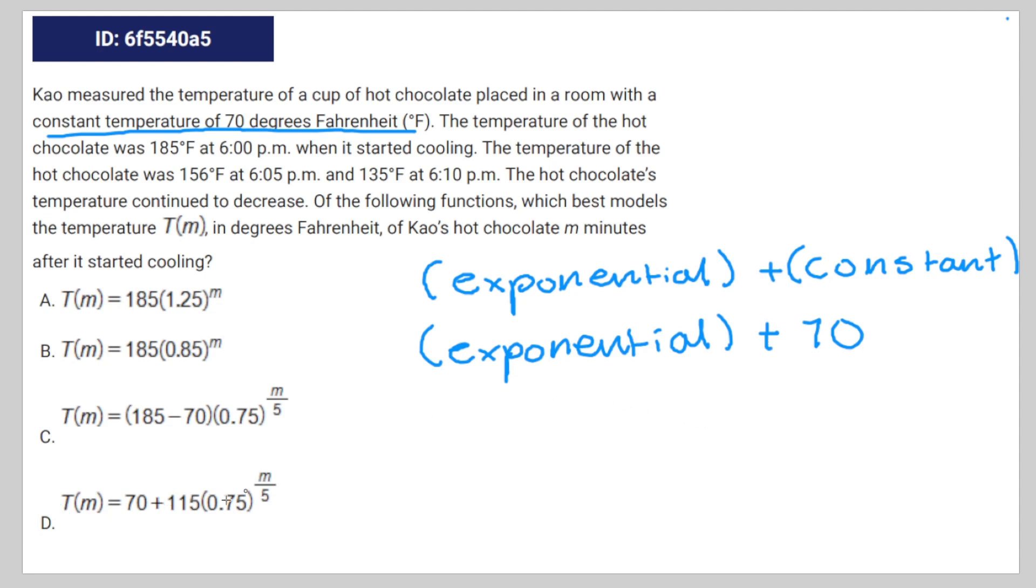But if you really aren't confident even after all that explanation, you can plug in the coordinates (5, 156) into the equation. It will give you T(5) equals 70 plus 115 times (.75) to the power of 1, which is going to give you a value very, very close to 156 but not exactly 156.